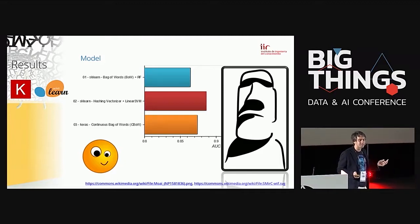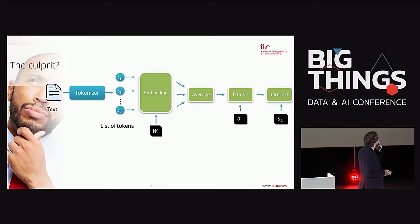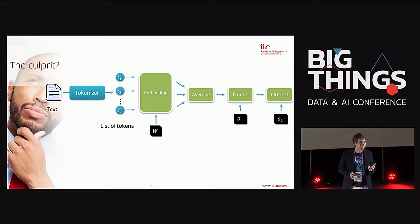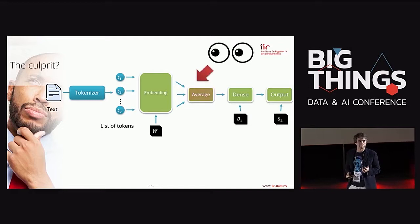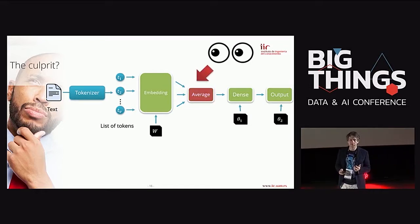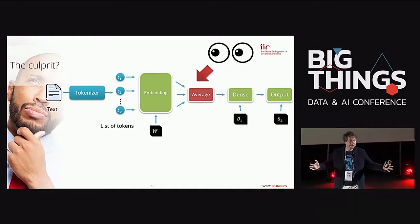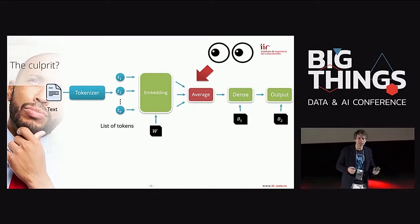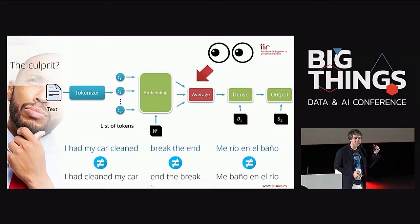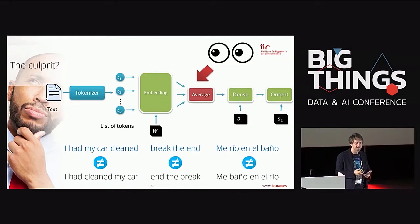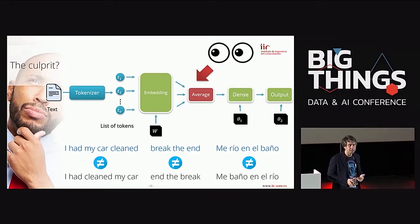The problem is a specific block: computing the average of all word embeddings. What you're telling the model is that the meaning of a sentence equals the average of the meanings of its words — and language doesn't work like that. This model can't tell the difference between sentences where word order matters, because averaging doesn't take order into account. We need something better.